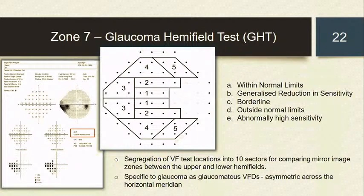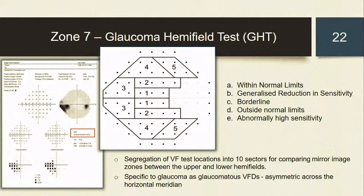Zone 7 is the glaucoma hemifield test (GHT). The algorithm, based on the anatomical arrangement of the retinal nerve fibre layer, segregates the tested visual field into 10 sectors — 5 in the superior and mirror pairs in the inferior hemisphere. This pattern was optimised for the diagnosis of glaucomatous visual field damage. The test conducts a pairwise sector comparison and looks for asymmetry in sensitivity, as asymmetry between the upper and lower hemifields is common in glaucoma. GHT gives output messages such as: within normal limits, generalised reduction in sensitivity (GRS), borderline, outside normal limits, or abnormally high sensitivity.